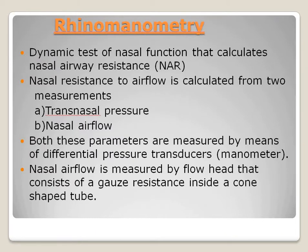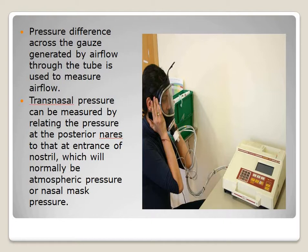Rhinomanometry is a dynamic test of nasal function that calculates nasal airway resistance. Nasal resistance to airflow is calculated from two measurements: transnasal pressure and nasal airflow. Both parameters are measured by differential pressure transducers. Nasal airflow is measured by a flow head consisting of a gauge resistance inside a cone-shaped tube; the pressure difference across the gauge generated by airflow through the tube is used to measure the airflow.